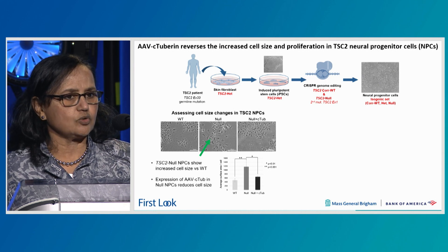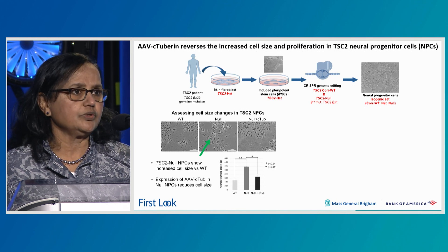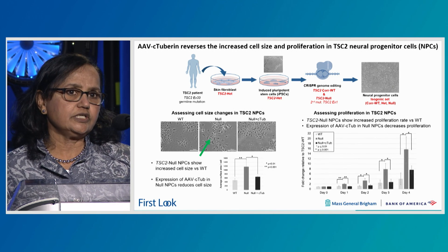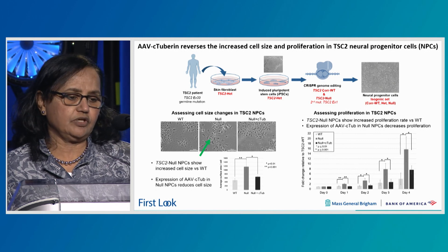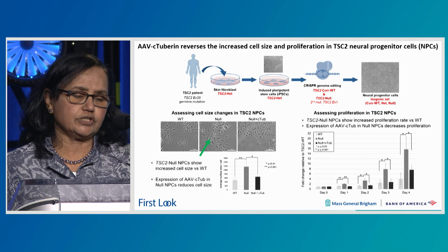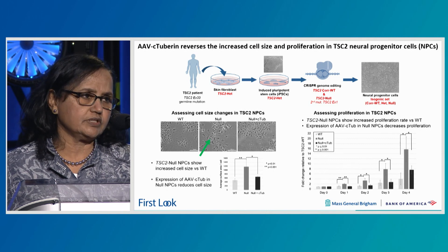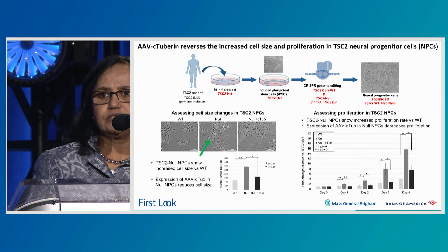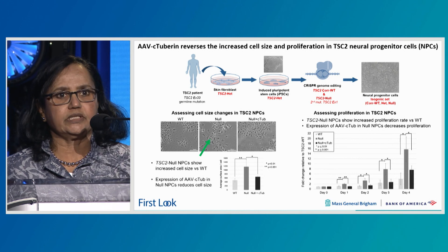At the bottom it is quantitated by a bar graph, clearly showing C-tuberin is functional in rescuing the cell size defect in patient-derived cells. Similarly, we see increased proliferation when keeping these cells up to a week — shown here at day three and day four. The null cells proliferate faster than wild type cells, and when you reintroduce C-tuberin in an AAV vector, you can see rescue of the cell proliferation defect. This gave us confidence that the condensed form of tuberin is functional and can rescue key phenotypes in the patient-derived model.